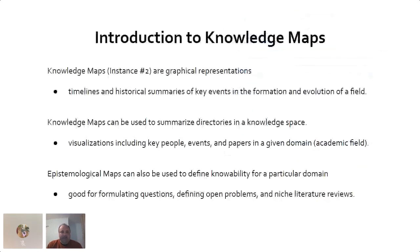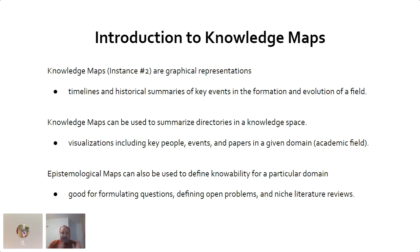The second instance is called a Knowledge Map — a bit of a departure from the first. These are graphical representations: timelines and historical summaries of key events. This is why I discussed history earlier. Knowledge maps can summarize directories in a knowledge space — how did a field unfold and what are the key events? We'll also get to the third instance, epistemological maps, in a couple of slides.